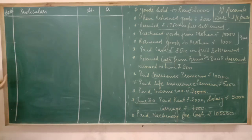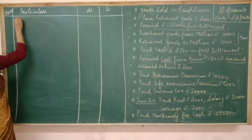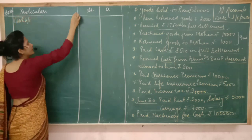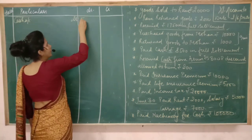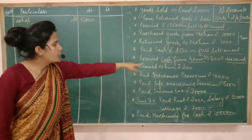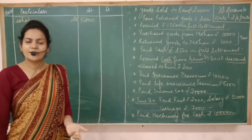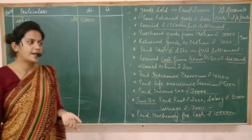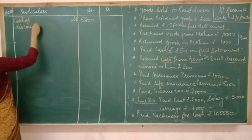Now let's see how to frame the entry. As you are receiving cash from Arun, cash will come into the business. Cash is an asset; the rule is debit what comes in, so cash account should be debited. How much have you received? 5800, so write 5800 on the debit side. Discount is allowed to Arun — it's your firm allowing the discount since your firm is receiving the cash. This discount will be an expense for you.